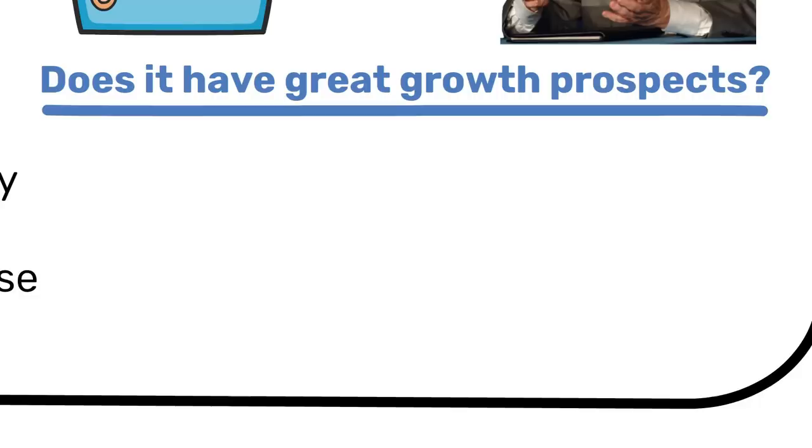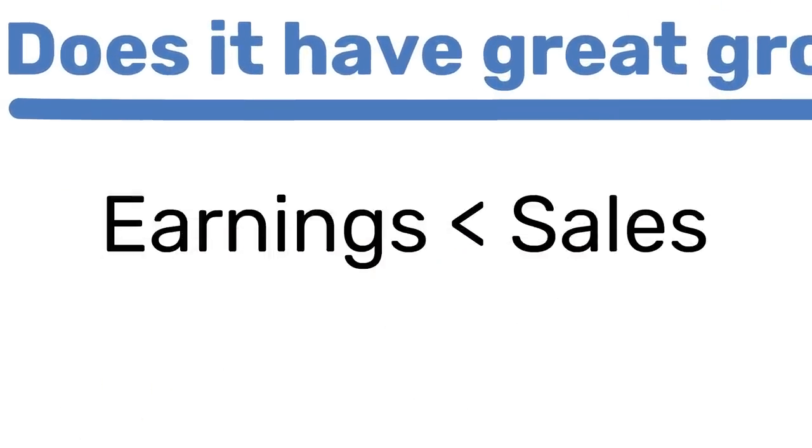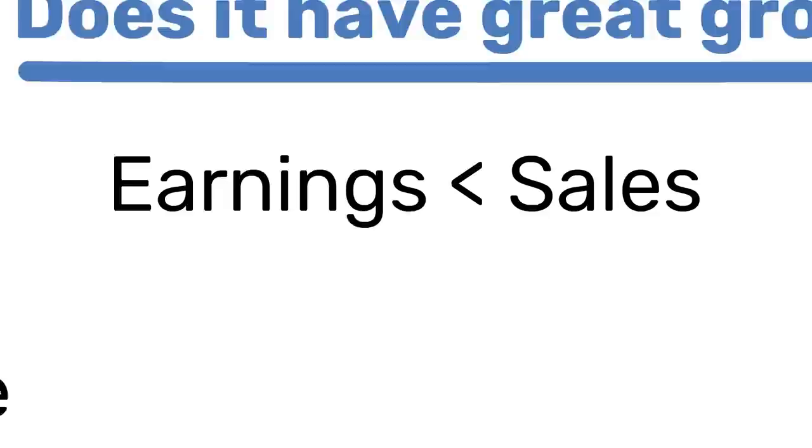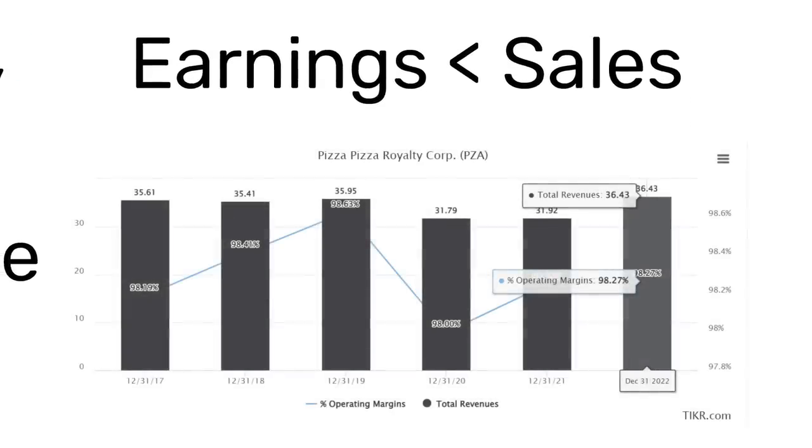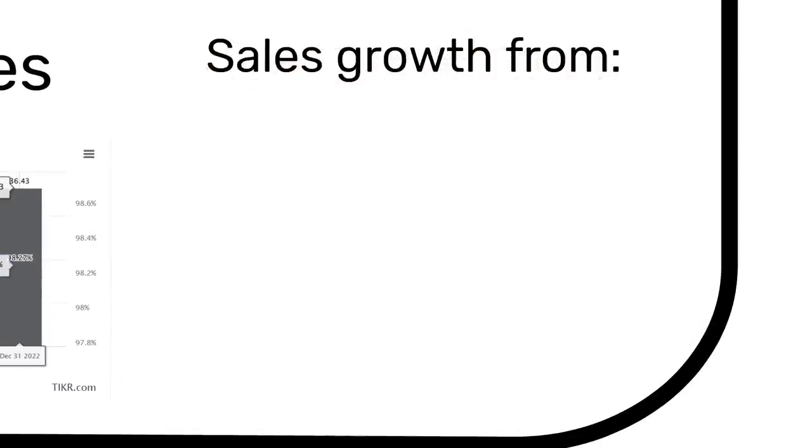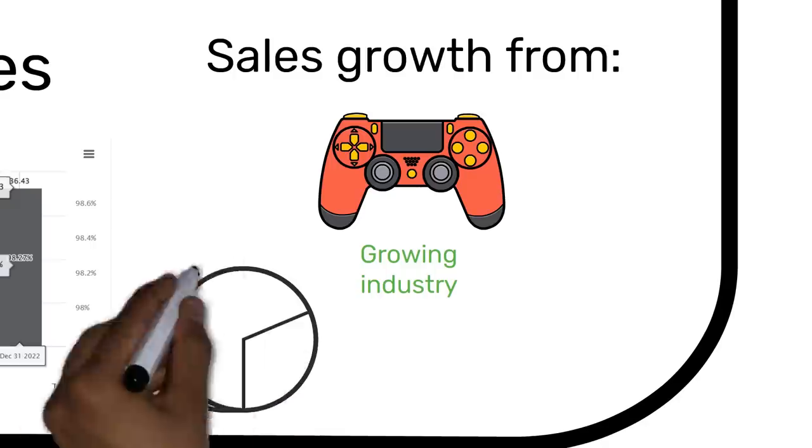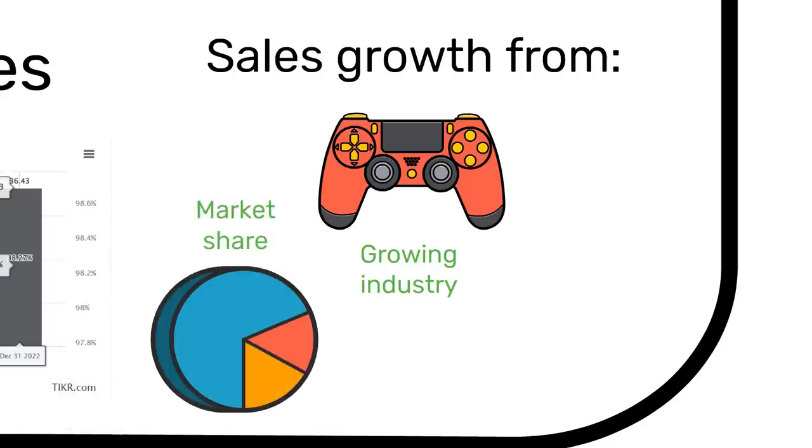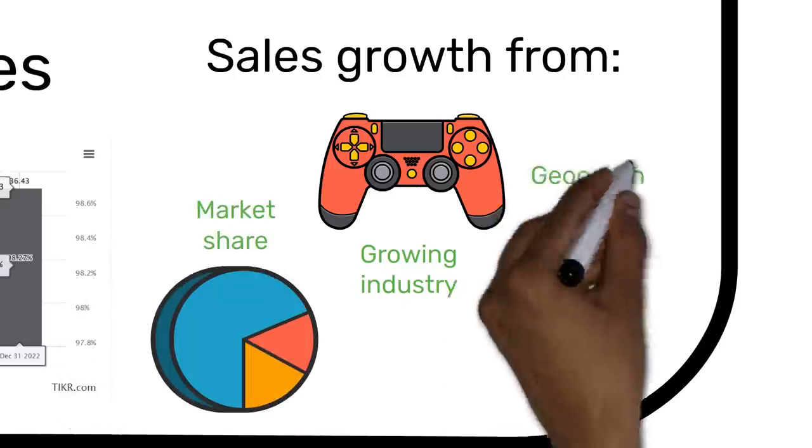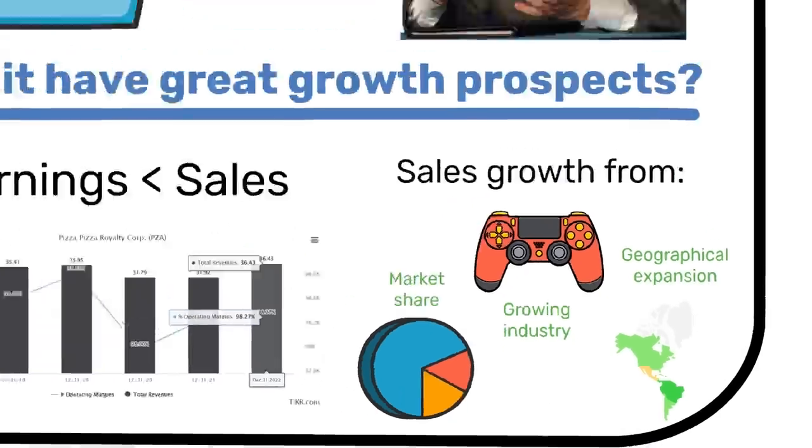For the second question, no company can grow earnings forever without eventually selling more. There's only so much that can be done with a profit margin. Even Pizza Pizza Royalty Corp. hasn't been able to breach 100% yet. Sales growth can come from a variety of different sources. Perhaps the industry itself is growing, and the company can ride that wave. Perhaps the company can steal market share from competitors. Or perhaps there are geographies that haven't been explored yet. A 100 to 1 stock absolutely requires some such opportunity for expansion.